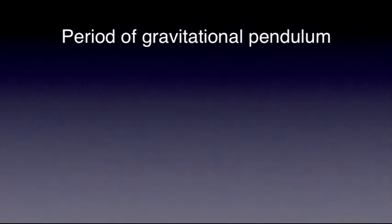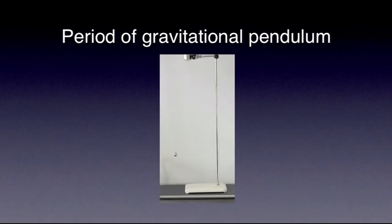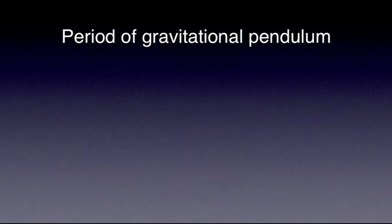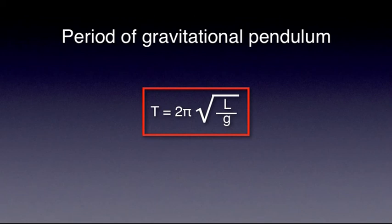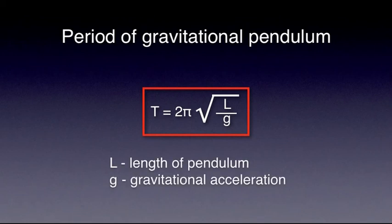It is relatively easy to show, and you can find this proof in any good textbook, that the period of a simple pendulum depends only on the length of the string and the acceleration due to gravity. The period is given by the formula T equals 2π square root of L over G, where L is the length of the pendulum and G is the gravitational acceleration.